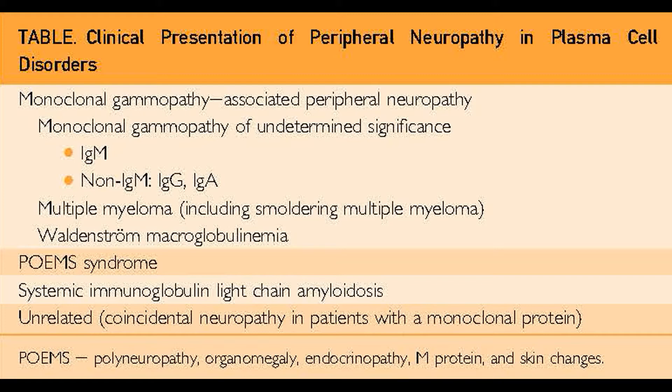Some types of monoclonal gammopathies that are associated with peripheral neuropathy include multiple myeloma, Waldenström's macroglobulinemia, POEMS syndrome, AL amyloidosis, and MGUS-associated neuropathy — MGUS standing for monoclonal gammopathy of undetermined significance. In the cases of Waldenström's, multiple myeloma, POEMS syndrome, and AL amyloidosis, there are often other systemic features that go along with the syndrome in addition to the peripheral neuropathy, and these features are helpful in aiding the diagnosis.